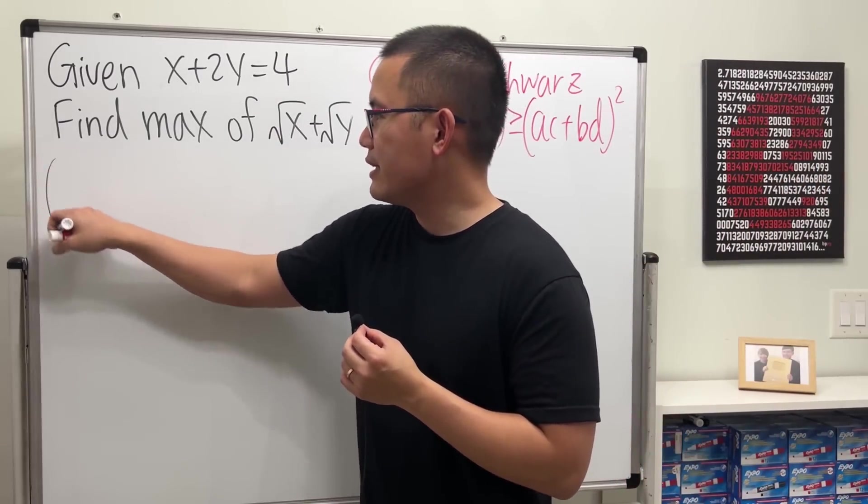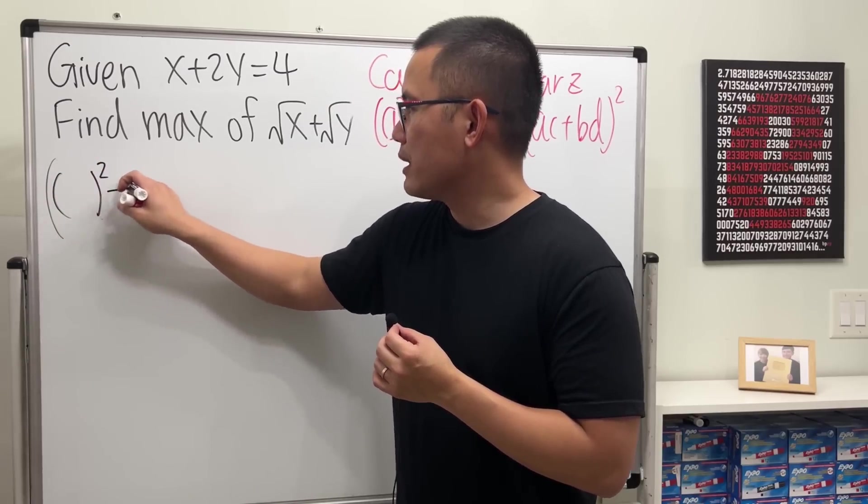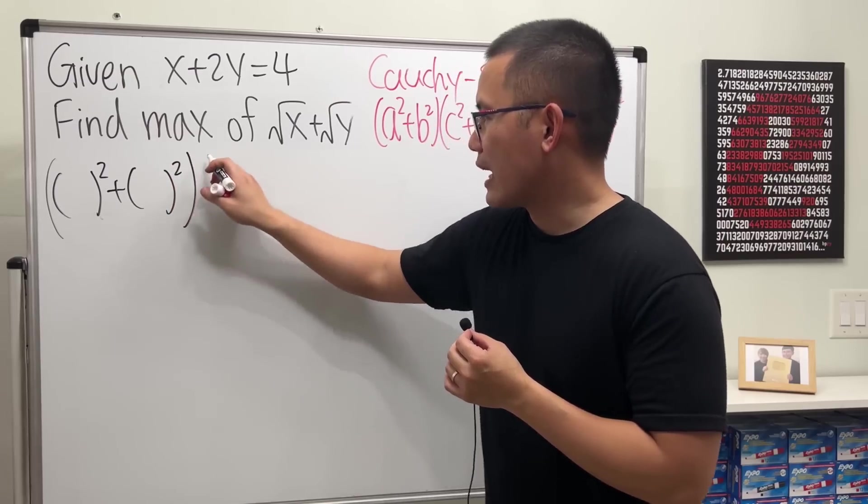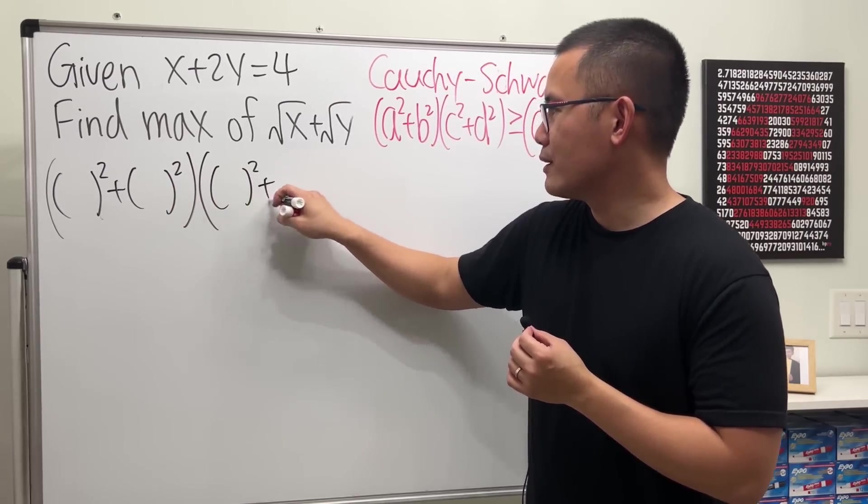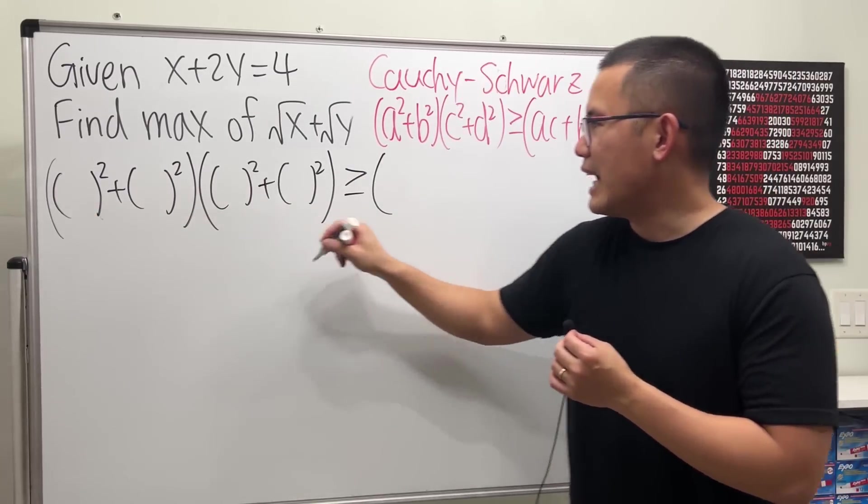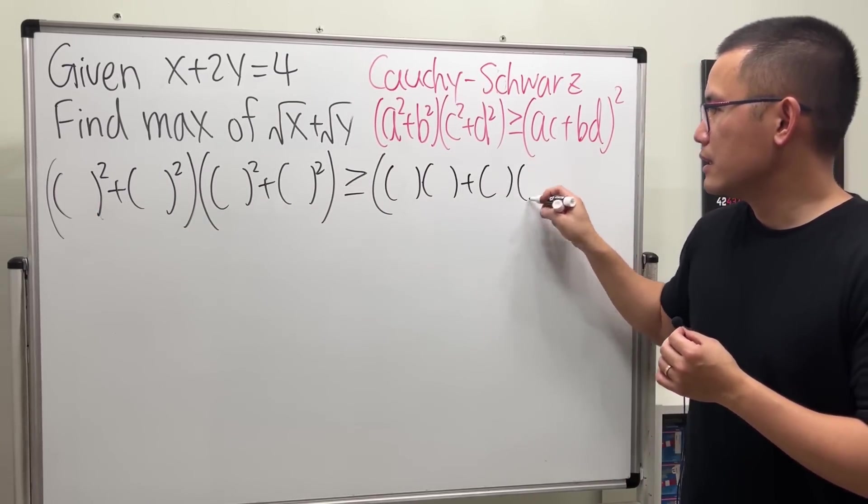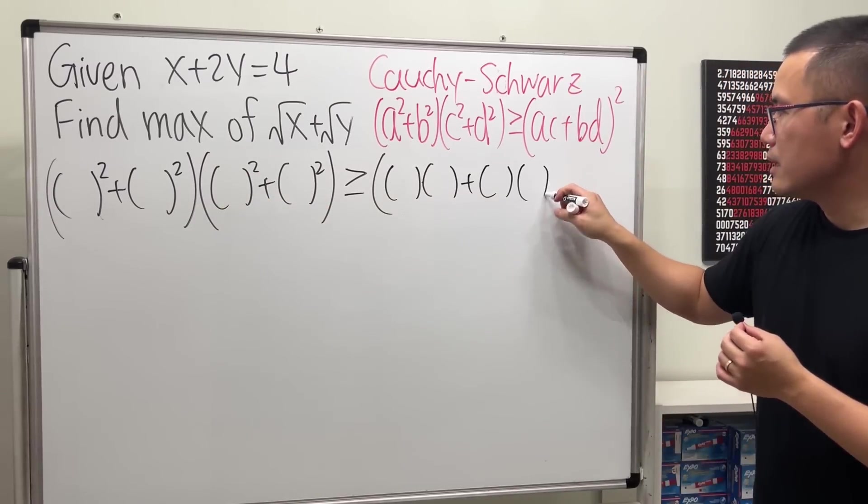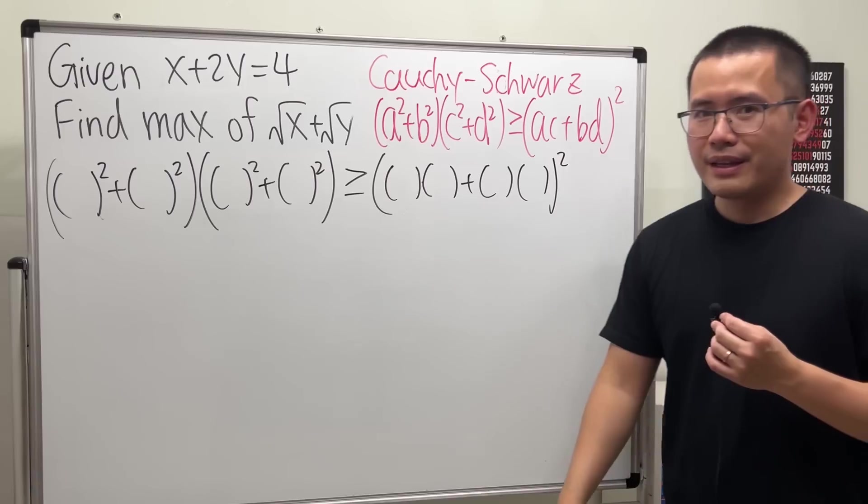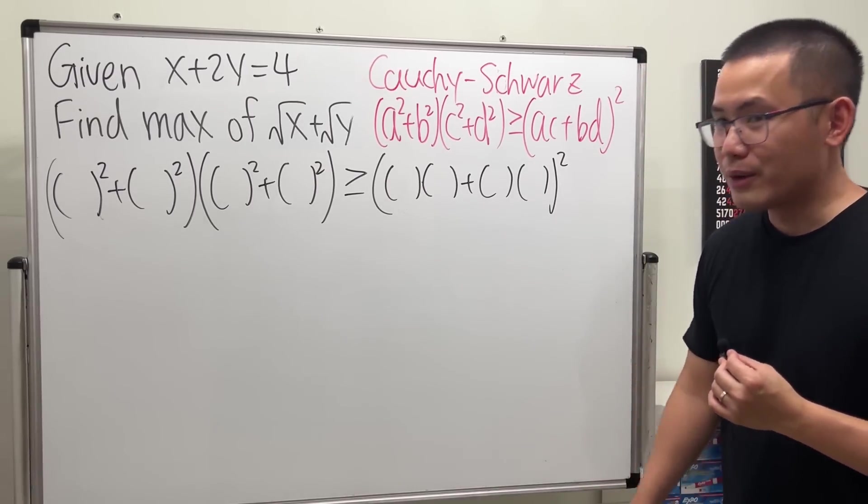So, let's just go ahead and use parentheses. So I will just have something squared plus something else squared times, we'll do the same thing here. This will be greater than or equal to this times that plus, this times that, and the whole thing squared. And we just have to play the game, fill in the blank.